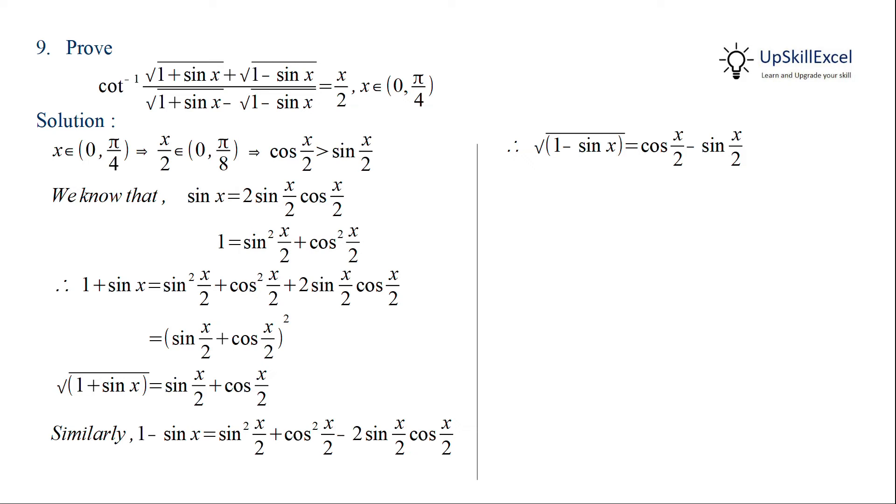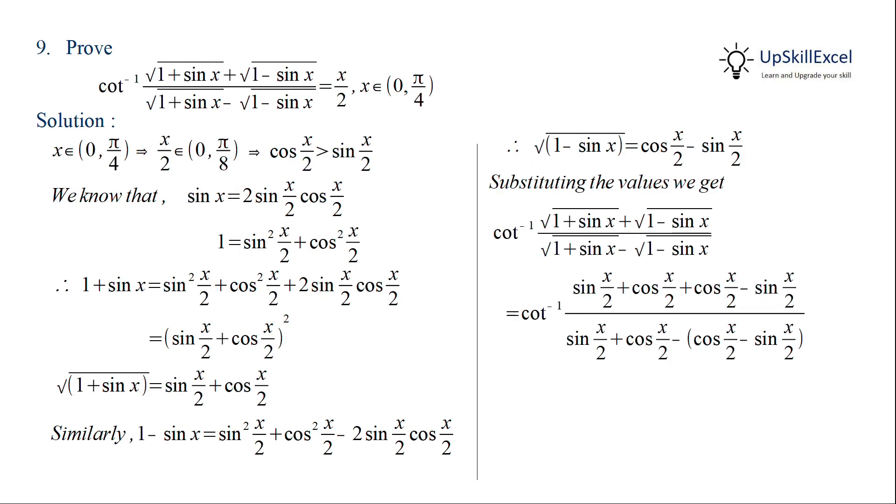Substituting square root of 1 plus sin x and square root of 1 minus sin x on the left hand side we get four terms in the numerator and denominator. In the numerator sin x by 2 gets cancelled, and in the denominator cos x by 2 gets cancelled, leaving cot inverse of 2 cos x by 2 by 2 sin x by 2. The 2s cancel and cos by sin can be written as cot x by 2. Now cot inverse of cot x by 2 is equal to x by 2.